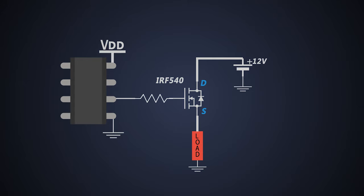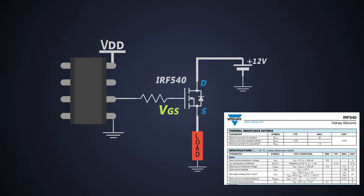Now, to turn on an N channel MOSFET, we need to provide positive VGS. Let's consider MOSFET IRF540. It has 2-4V of the gate threshold voltage. Which means the voltage difference between gate and source should be at least positive 2V.